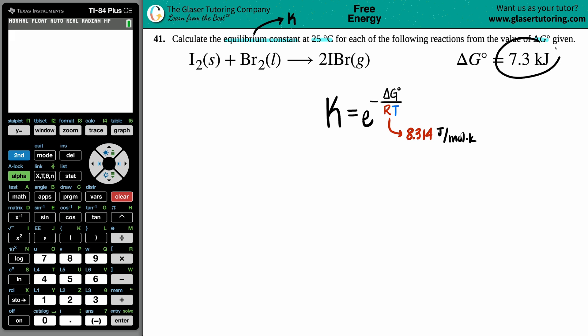Uh-oh, they gave me kilojoules, but that's okay. I can convert kilojoules into joules. All we got to do is just multiply by a thousand, move the decimal over three times to the right. So this would just be 7,300 joules, and that's the value that goes up in the top.